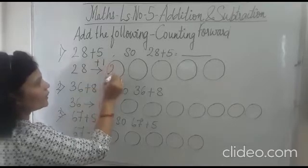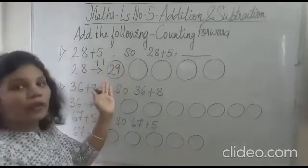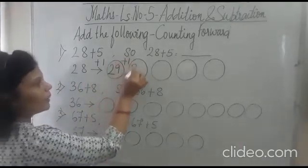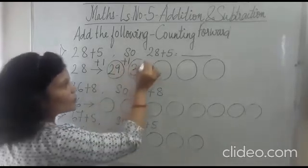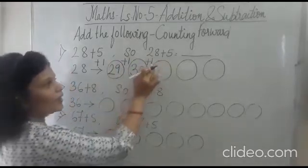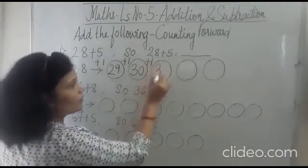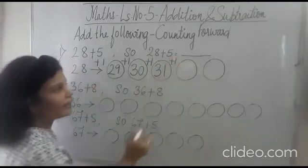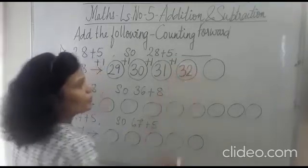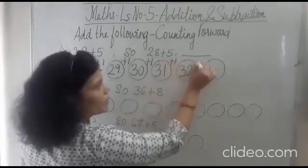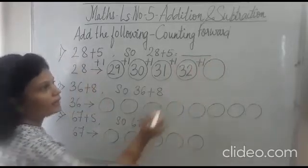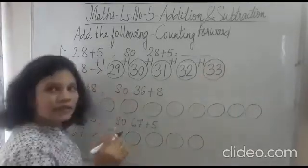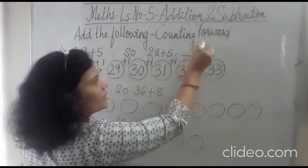So it will become 29. 29 because I am counting forward. Now again if I add 1 here, so it will become 30. One more step ahead. That means I have to add 1 again. So it will become 31. Now one more step I am going to walk ahead. So it will become 32. One more step because I have to add 5 numbers ahead. So it will become 33. So what the answer I got? 28 plus 5 is equal to 33. How?